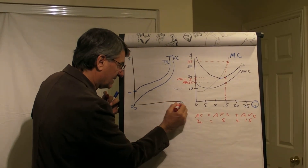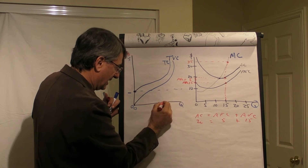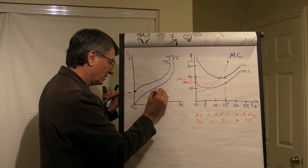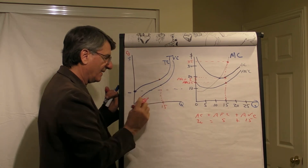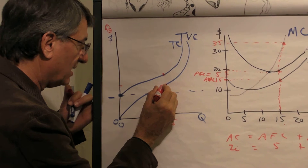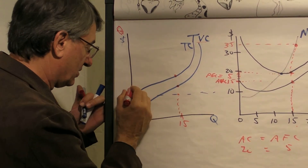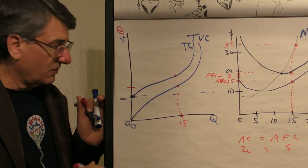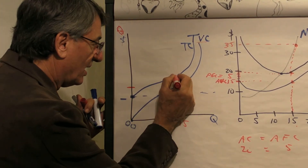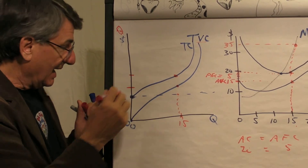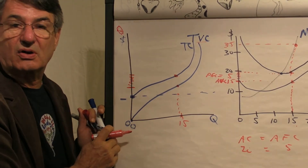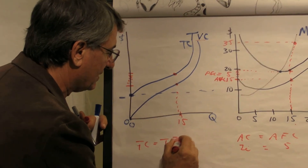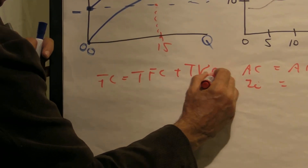Now let's go over to this graph — this is the same quantity axis. We'll find fifteen here. This point on this total variable cost curve says that if you produce fifteen units, your total variable cost will be that amount. And your total cost will be that amount. And the difference between the two will be your total fixed cost, because total cost equals total fixed cost plus total variable cost.